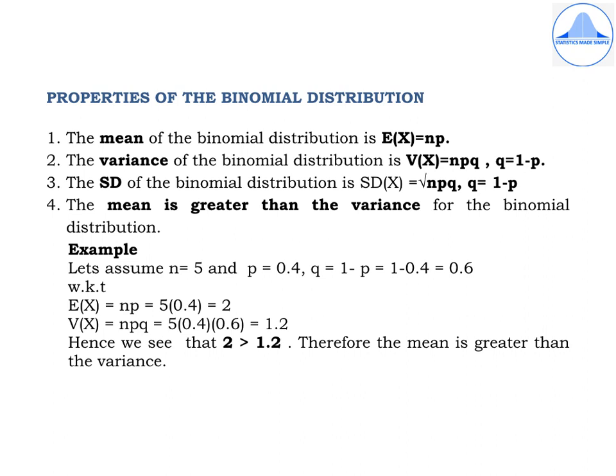The first property is the mean of the binomial distribution: E(x) = nP. The second property is the variance of the binomial distribution: V(x) = nPQ, where Q = 1 − P.